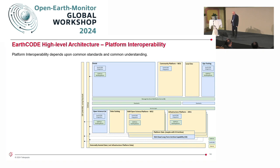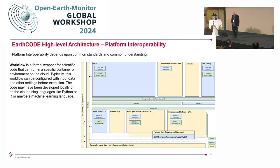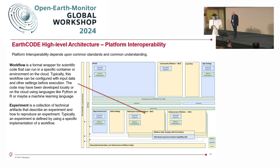Platform interoperability depends upon standards and a common understanding of those standards. There are some concepts EarthCode relies upon. One is the concept of a workflow — a formal wrapper for scientific code that can run a specified container or environment on the cloud, configurable with input data or other settings before execution. The code may have been developed locally or on the cloud using languages like Python or machine learning languages. An experiment then is a collection of technical artefacts that describe an experiment and how to reproduce it. An experiment is a specific implementation of a workflow, where a workflow is a generic concept.